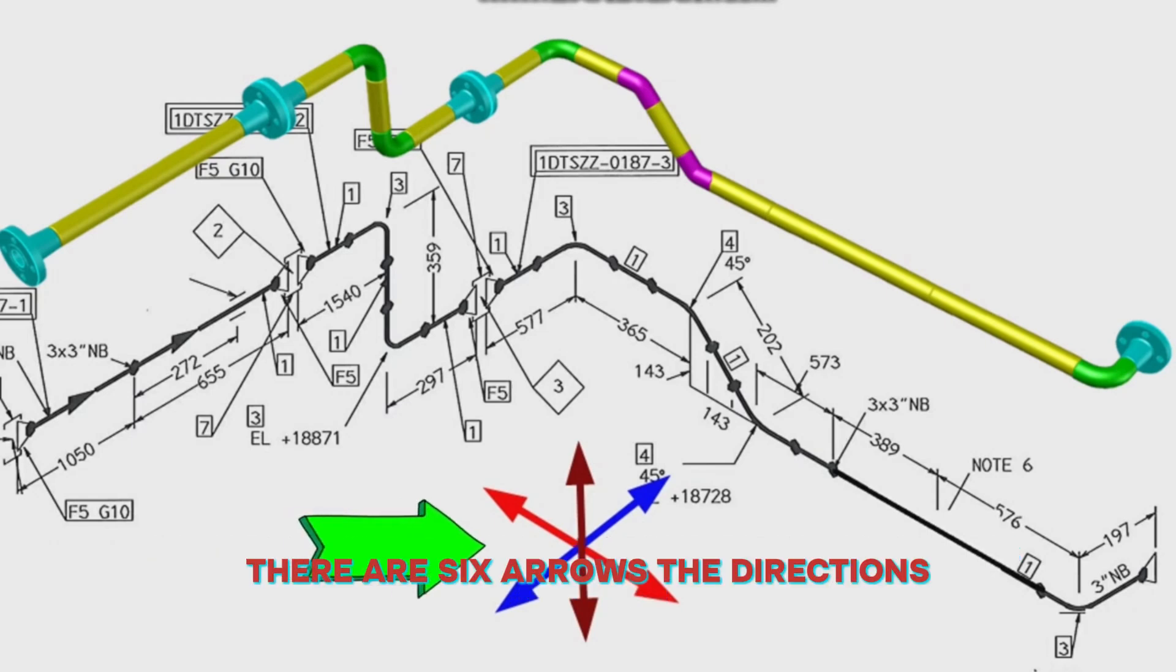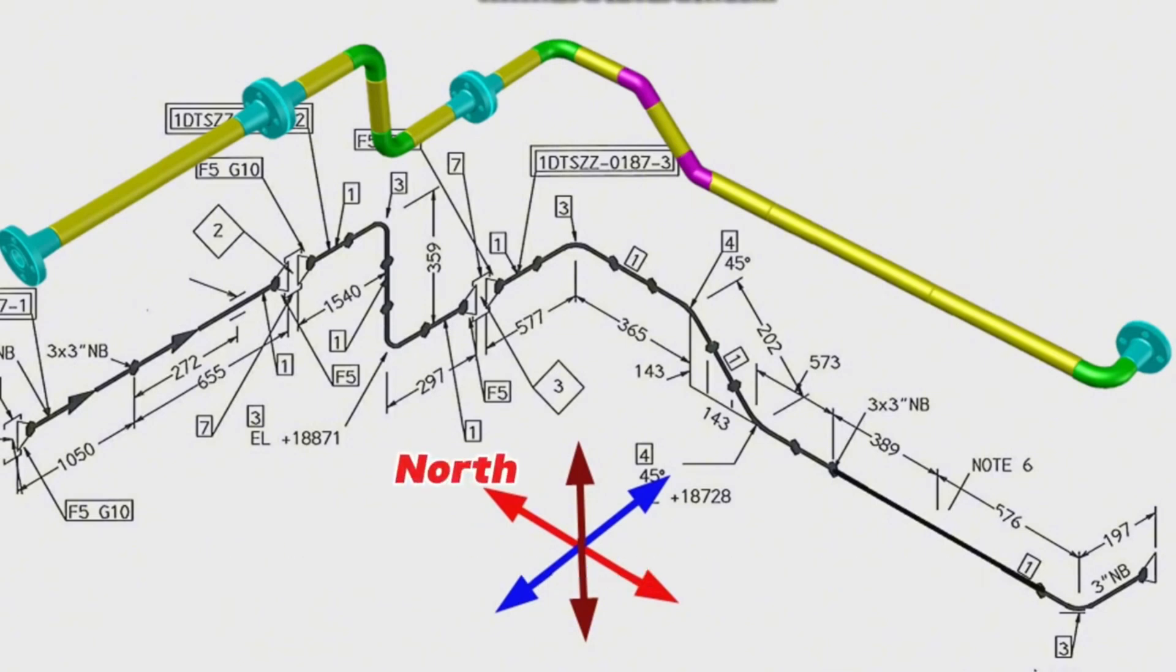There are six arrow directions showing in this piping isometric drawing: North direction, South direction, East direction, West direction, Up direction, and Down direction.